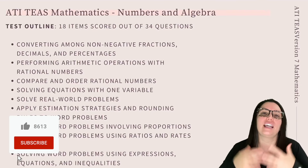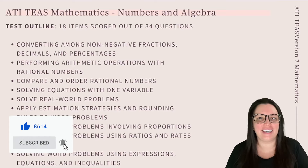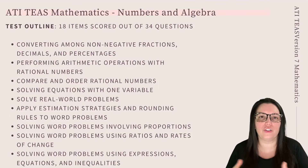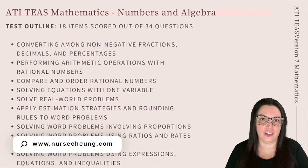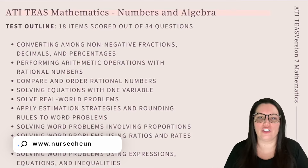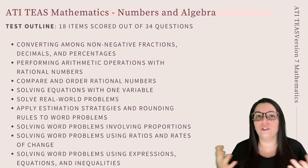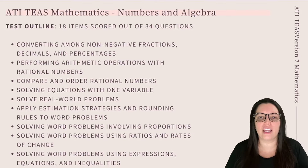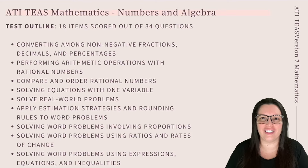We begin by looking at the objectives — specifically what you need to know to pass this exam. There will be a total of 18 questions out of the cumulative 34 questions for the mathematics portion. You need to know: converting among non-negative fractions, decimals, and percentages; performing arithmetic operations with rational numbers; comparing and ordering rational numbers; solving equations with one variable; solving real-world problems; applying estimation strategies and rounding rules to word problems; and using proportions, ratios, rates of change, as well as expressions, equations, and inequalities.